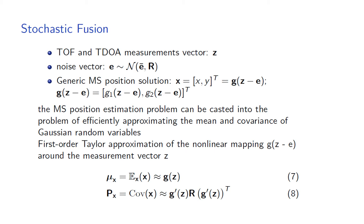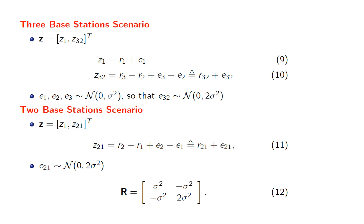Since the mapping G is nonlinear, the corresponding MS position will be non-Gaussian distributed. Hence, the MS position estimation problem is cast as efficiently approximating the mean and covariance of Gaussian random variables transformed through nonlinearities. In this work, we restrict our analysis to a first-order Taylor approximation of the nonlinear mapping around the measurement vector Z. For the three-base-station scenario, the measurement vector is given by Z1 and Z32, where Z1 denotes the noisy range measurement from serving base station S1, and Z32 denotes the noisy range difference measurement from neighboring base stations S3 and S2.